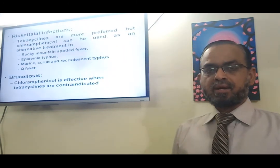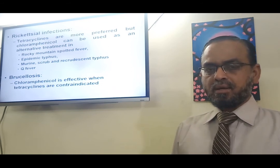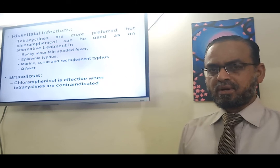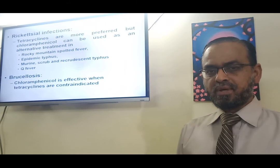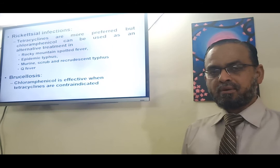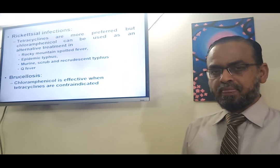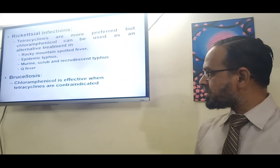For rickettsial infections, tetracyclines are the first choice and macrolides the second. Chloramphenicol is the third choice. For brucellosis, tetracyclines and macrolides are preferred, with chloramphenicol as an alternate.